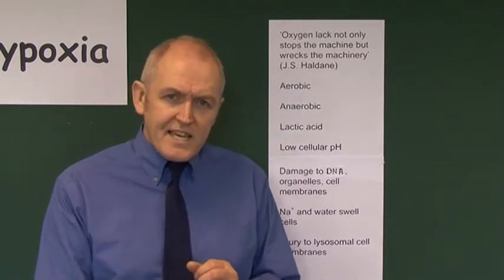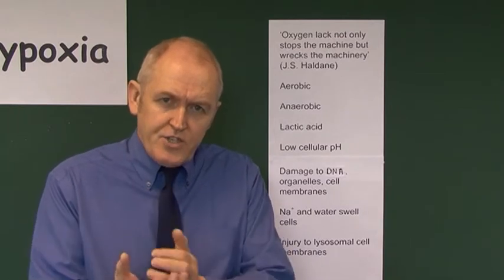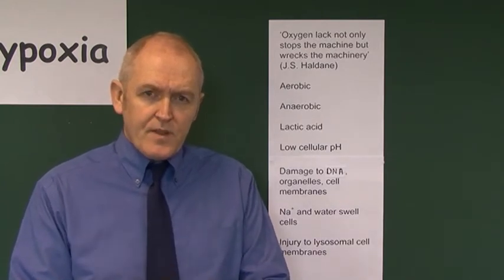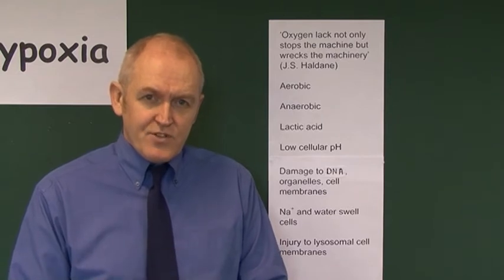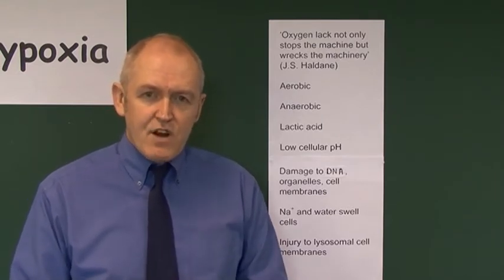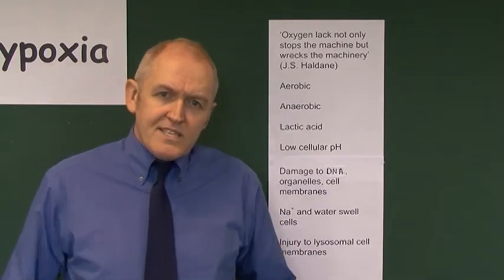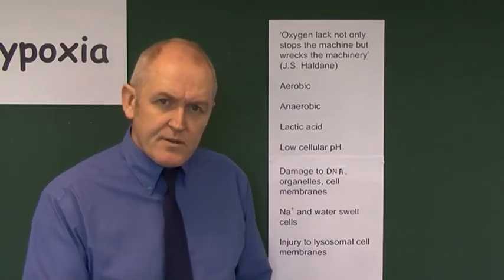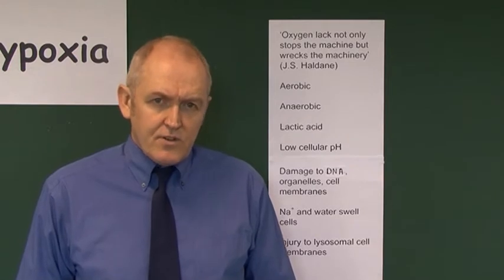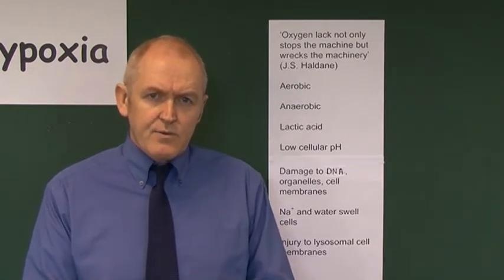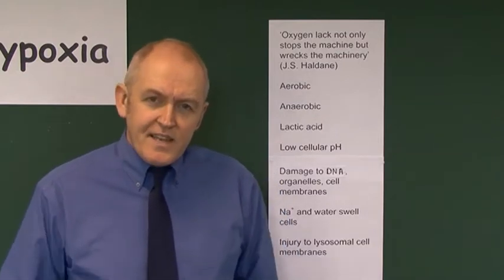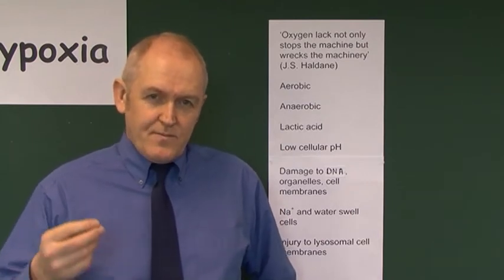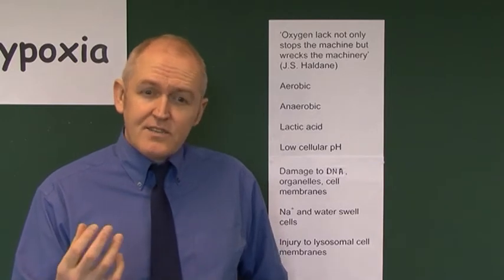Normally, when a cell is using oxygen in the production of energy, that is called aerobic — with the presence of oxygen. So energy production in the presence of oxygen is aerobic energy production, aerobic metabolism. But if a cell is deprived of oxygen, it can still go on producing energy, at least for a short period of time, in the absence of oxygen. The production of energy in the absence of oxygen is called anaerobic respiration.